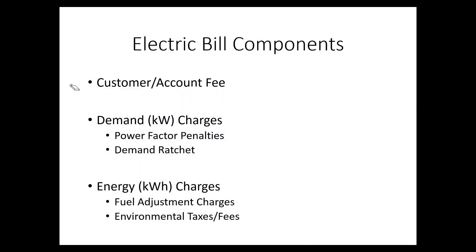Now we're going to talk about electric bill components. These are the things you'll find on most electric bills throughout the world. Basically, there are three main categories: the customer account fee, demand charges, and energy charges. We're going to hit each one of these individually.